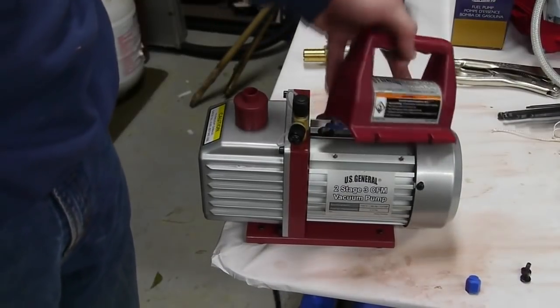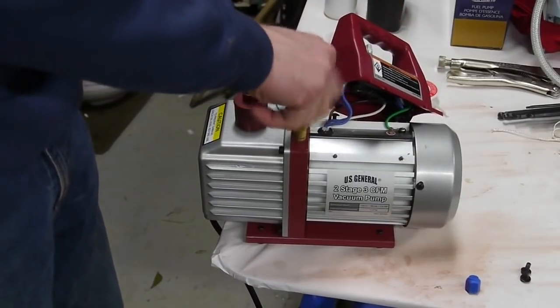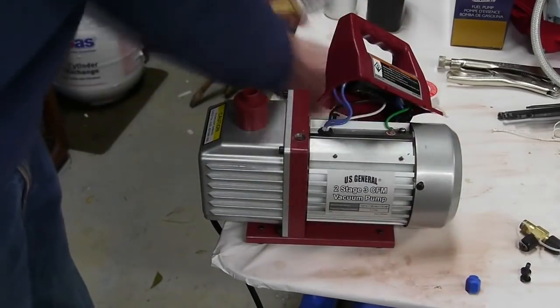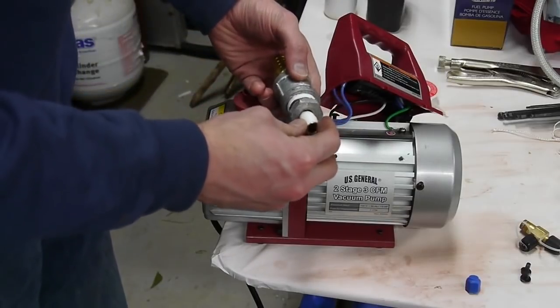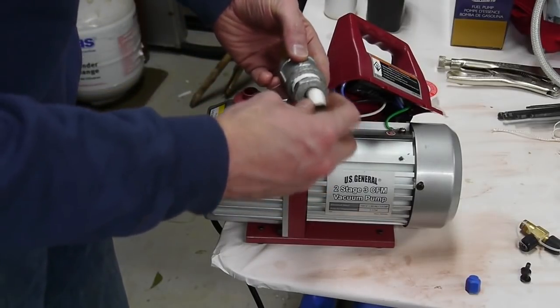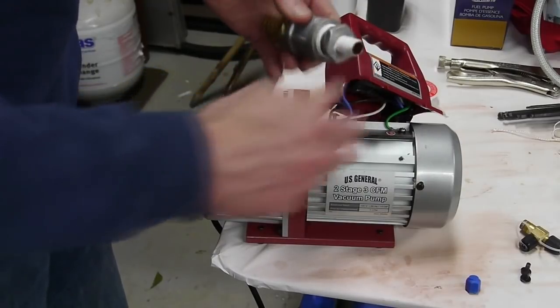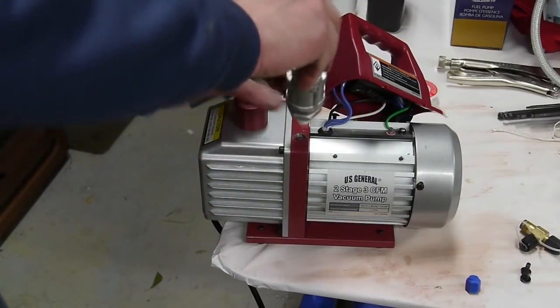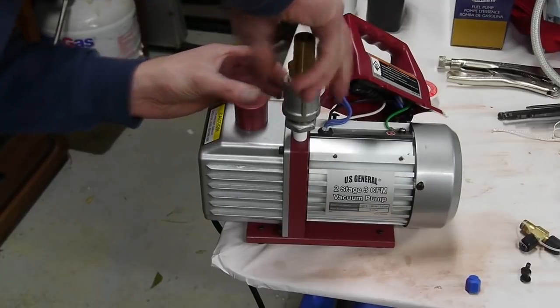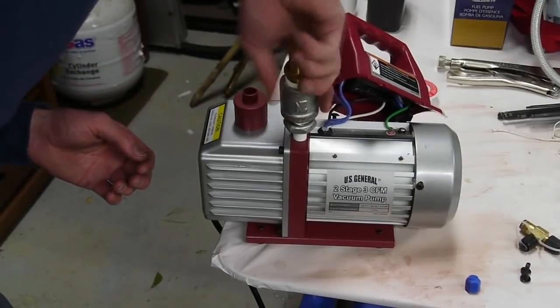I started with a Harbor Freight 3 CFM vacuum pump. CFM is cubic feet per minute. This is the biggest one that they sell as far as I know. I modified it by taking off the fitting that was originally there for air conditioning service and replaced it with a much larger hose fitting.